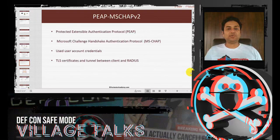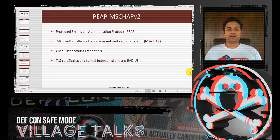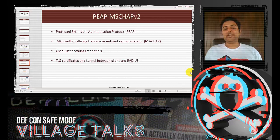The scheme used in this demo is PEAP/MSCHAPv2. PEAP stands for Protected Extensible Authentication Protocol — 'protected' because all EAP packets exchanged between client and authentication server pass through a TLS tunnel, so even the access point cannot inspect them. MSCHAP is Microsoft Challenge Handshake Authentication Protocol — a challenge-response authentication protocol where one party sends a challenge and the other responds, and they verify each other. User credentials (username and password) are used, and a TLS certificate establishes the tunnel and verifies the client is connecting to the correct authentication server.